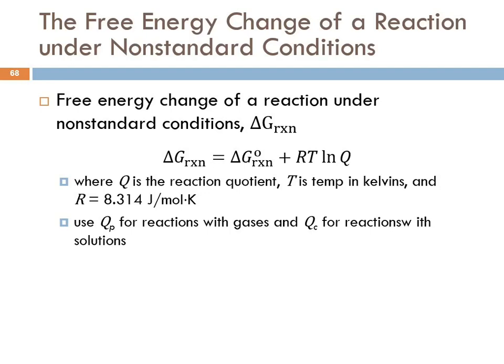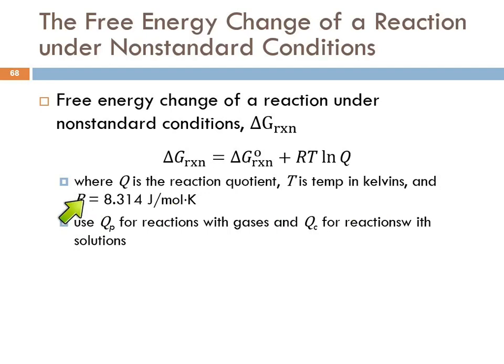To calculate the free energy change of a reaction under non-standard conditions — that is delta G reaction without the little zero — it equals the standard free energy change plus RT times the natural log of Q. Q is the reaction quotient. T is temperature in Kelvins. And R is the ideal gas constant: 8.314 joules per mole Kelvin, which gives us the correct units.